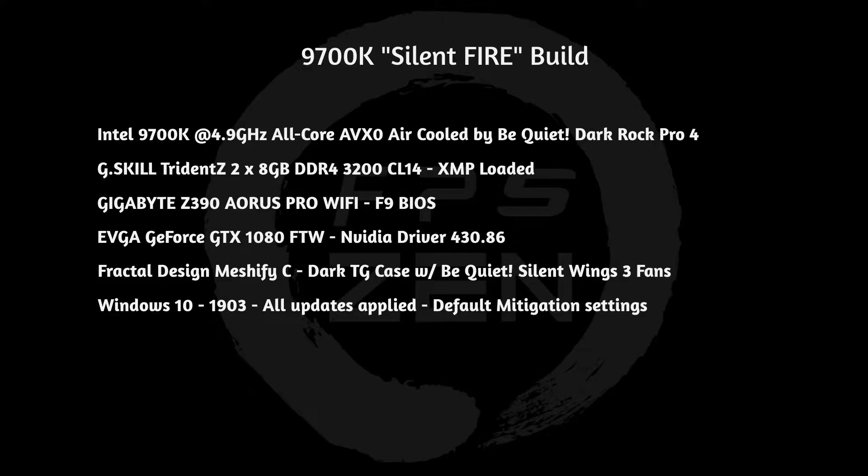Most people think you need a custom loop, liquid cooling, or a really good AIO to run a 9700k or 9900k, but that's just not true. At certain settings you can run Intel's ninth generation on air cooling, as long as you have a really good air cooler like Noctua's D15 or the be quiet Dark Rock Pro 4. I've paired that with G.Skill Trident Z 16GB at 3200 CL14 XMP profile, on my Gigabyte Z390 Aorus Pro Wi-Fi motherboard running the latest BIOS F9.